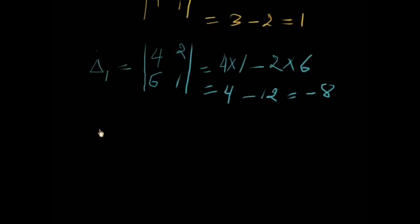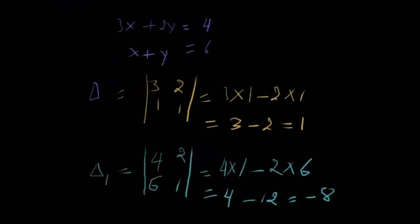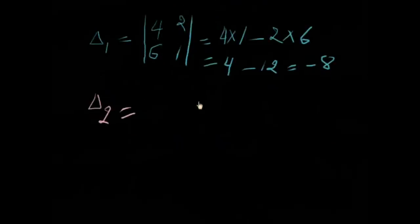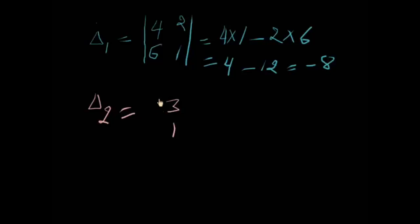Now we will calculate delta two. We change the second column with these values. Three and one will remain the same in the first column, and we write the new values in the second column.